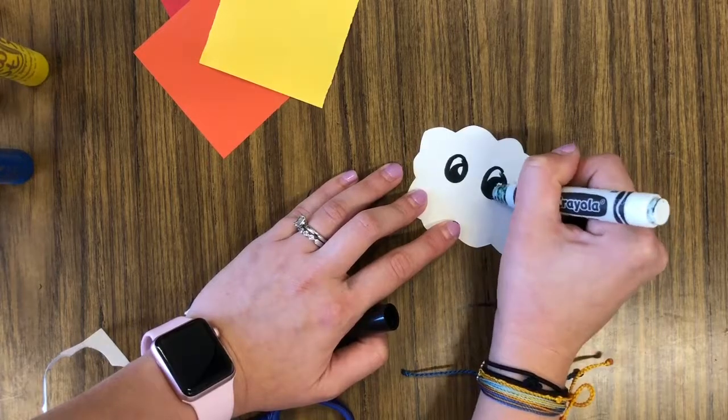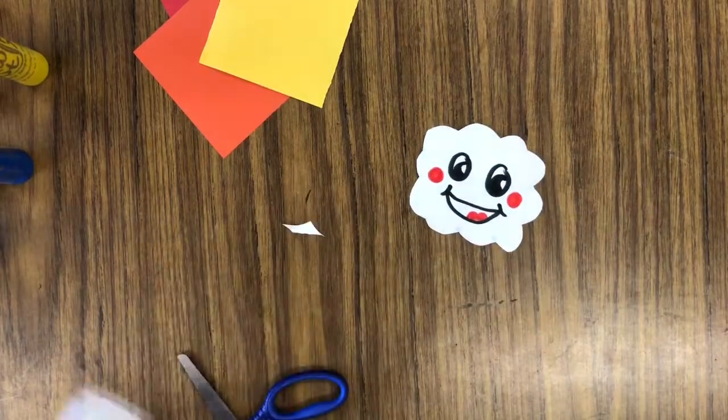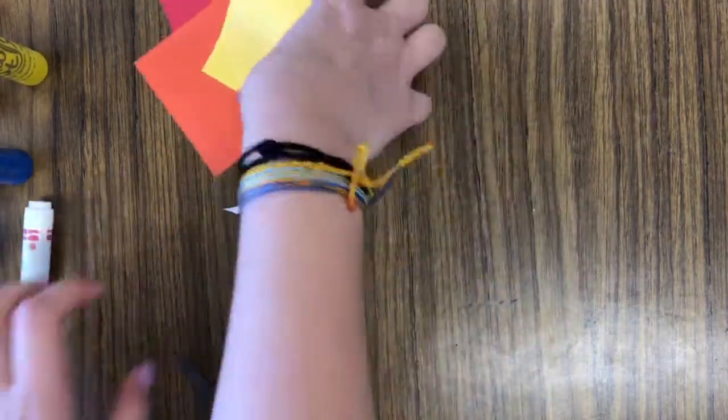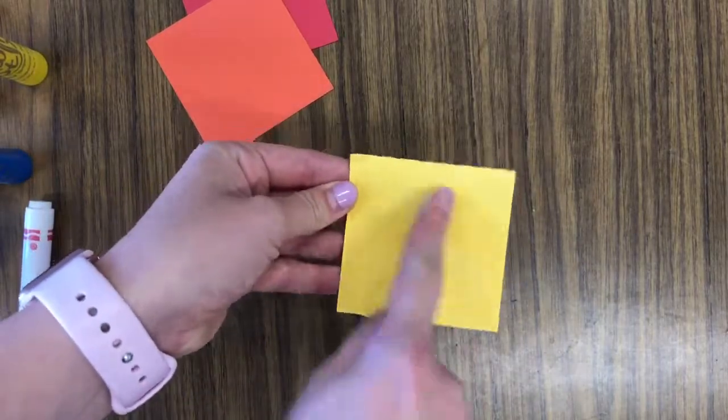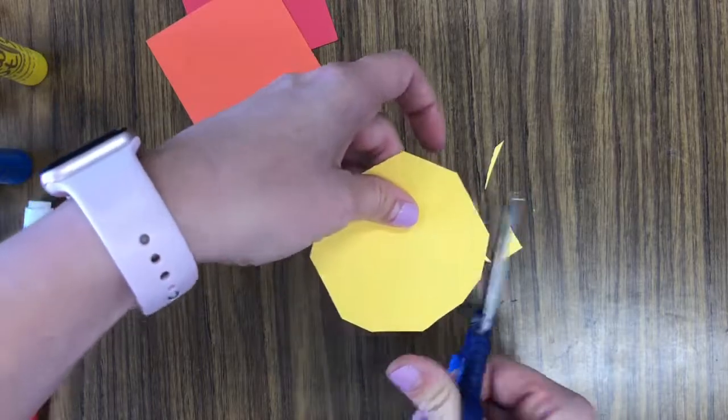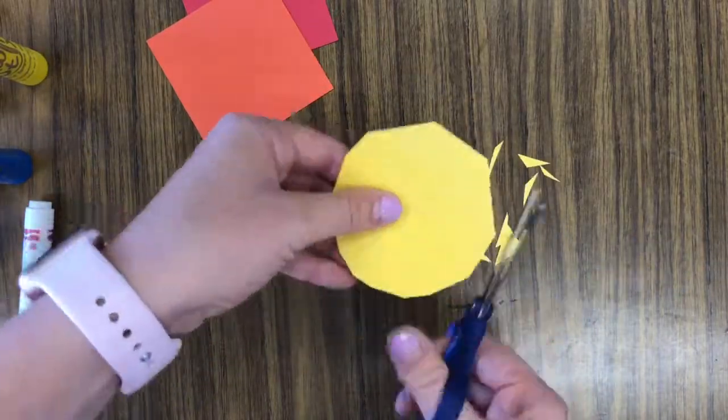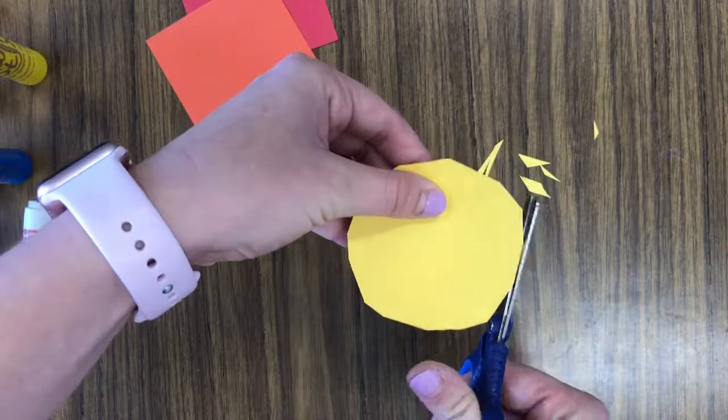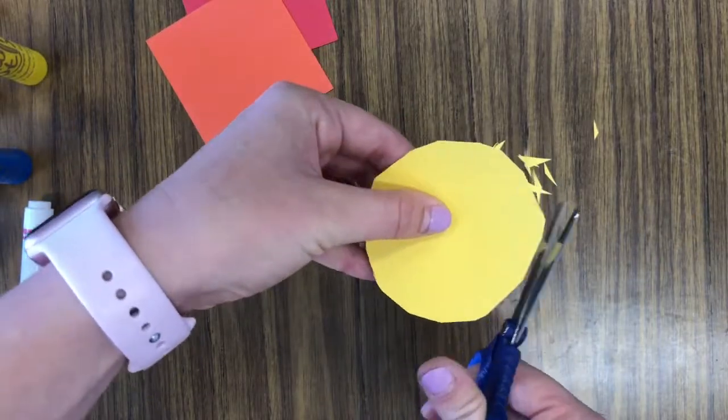For the other end of your rainbow we will make a sunshine. Start by cutting a yellow or orange circle. The best way to cut a circle is to start with a square of paper and cut off the corners. Next go around and around cutting off all of the pointy pieces until you have a round circle piece of paper.